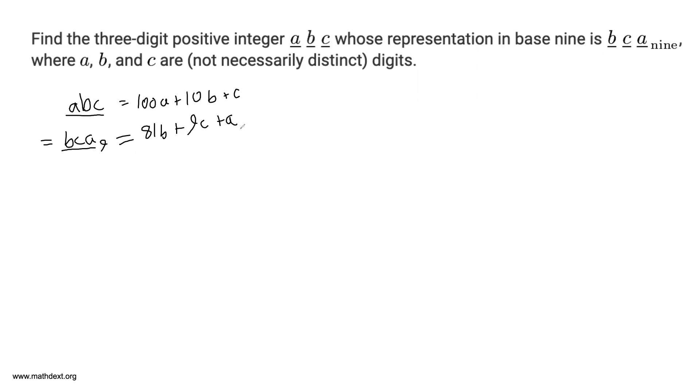Let's go ahead and move everything over to one side. You have 100A minus A. That's 99A minus 71B. That's 10B minus 81B minus 8C is equal to 0.